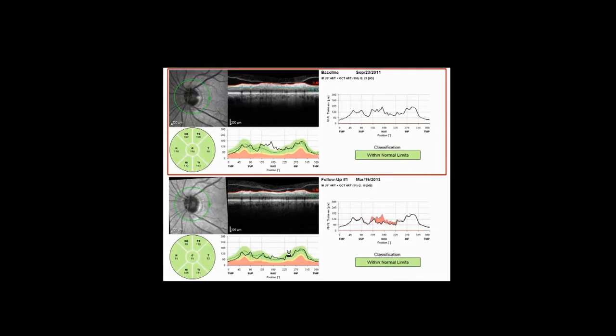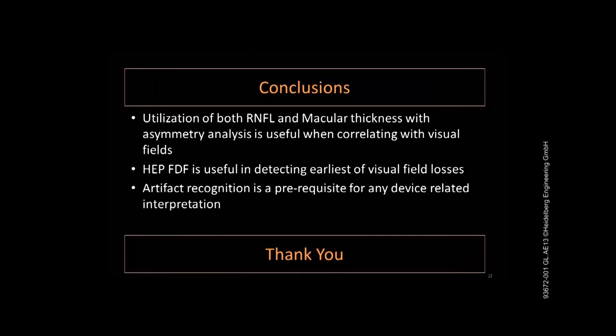In conclusion, the utilization of both nerve fiber layer and macular thickness with asymmetry analysis is useful when correlating with visual fields. The Heidelberg Edge Perimeter FDF is useful in detecting the earliest visual field losses. Artifact recognition is a prerequisite for any device-related interpretation.